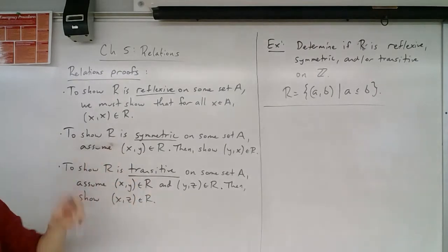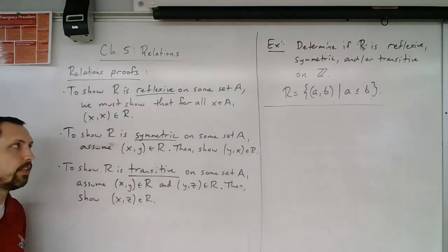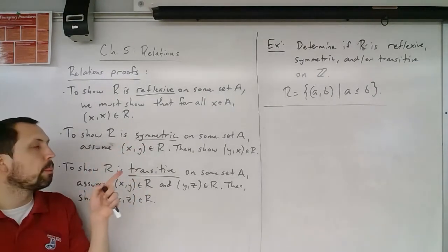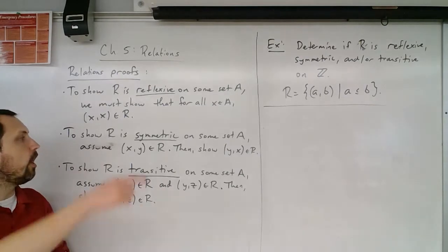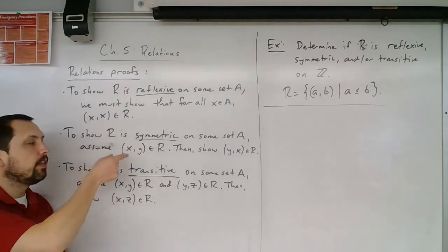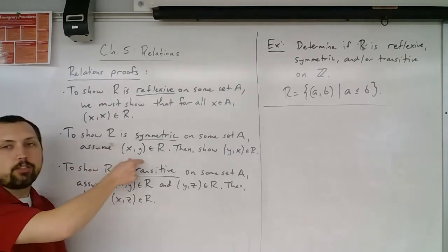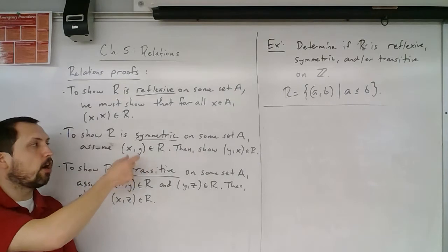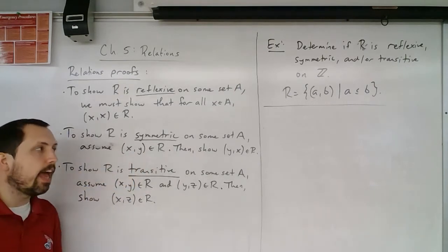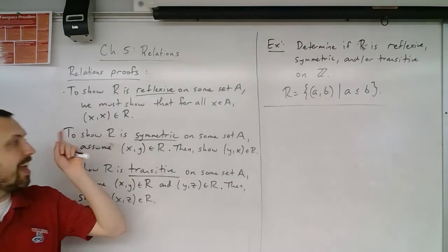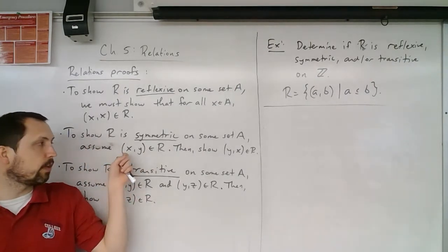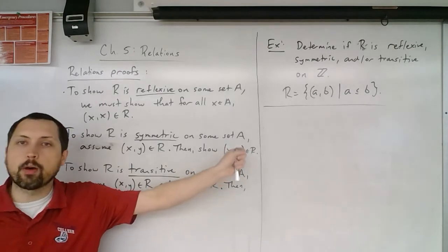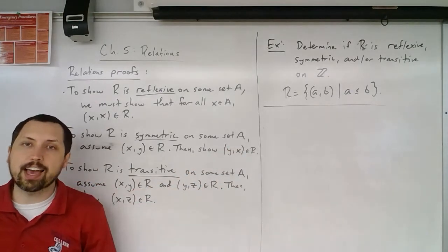To show that R is symmetric, we must assume that x is related to y — that is, (x, y) is in R — and then show that if this is true, then y is also related to x.